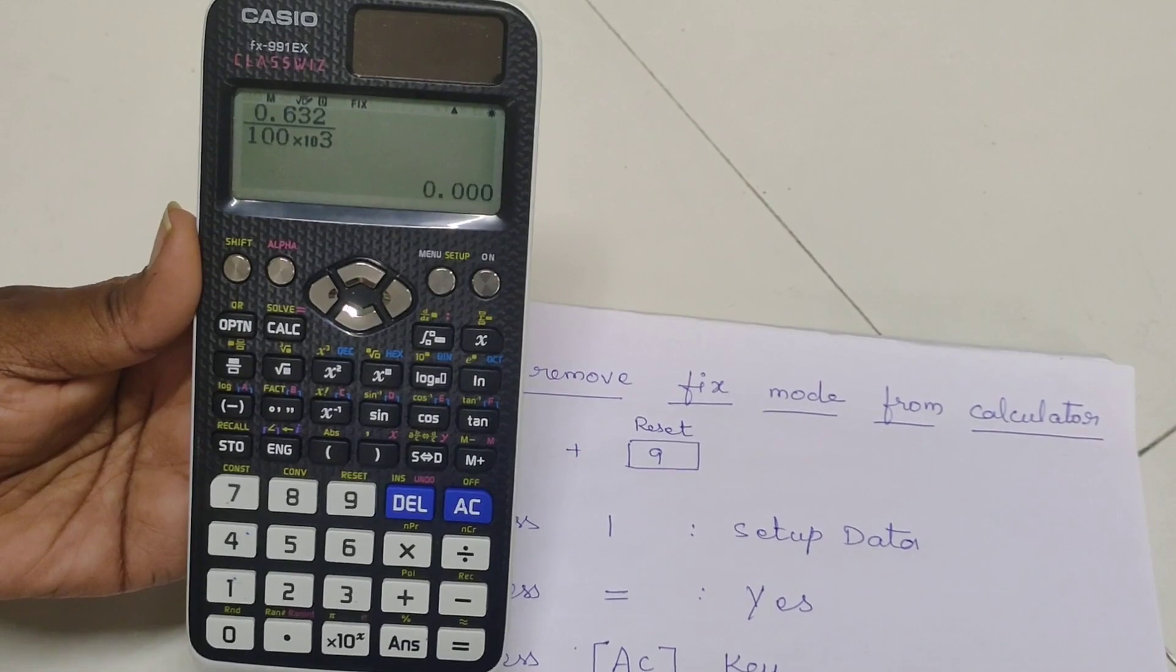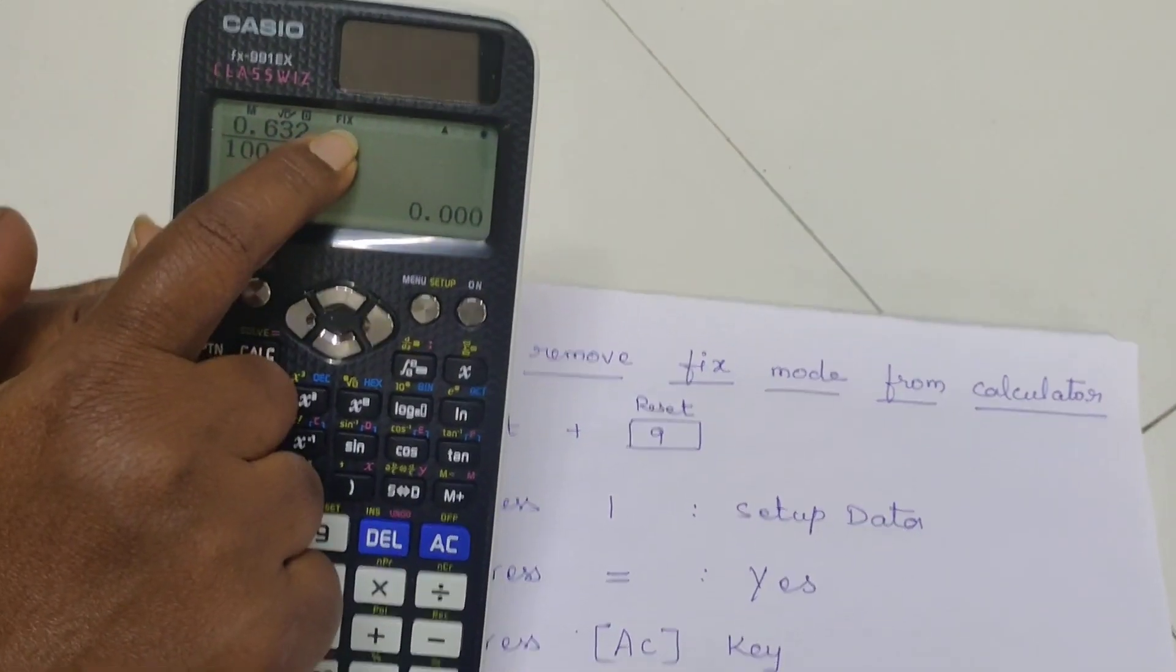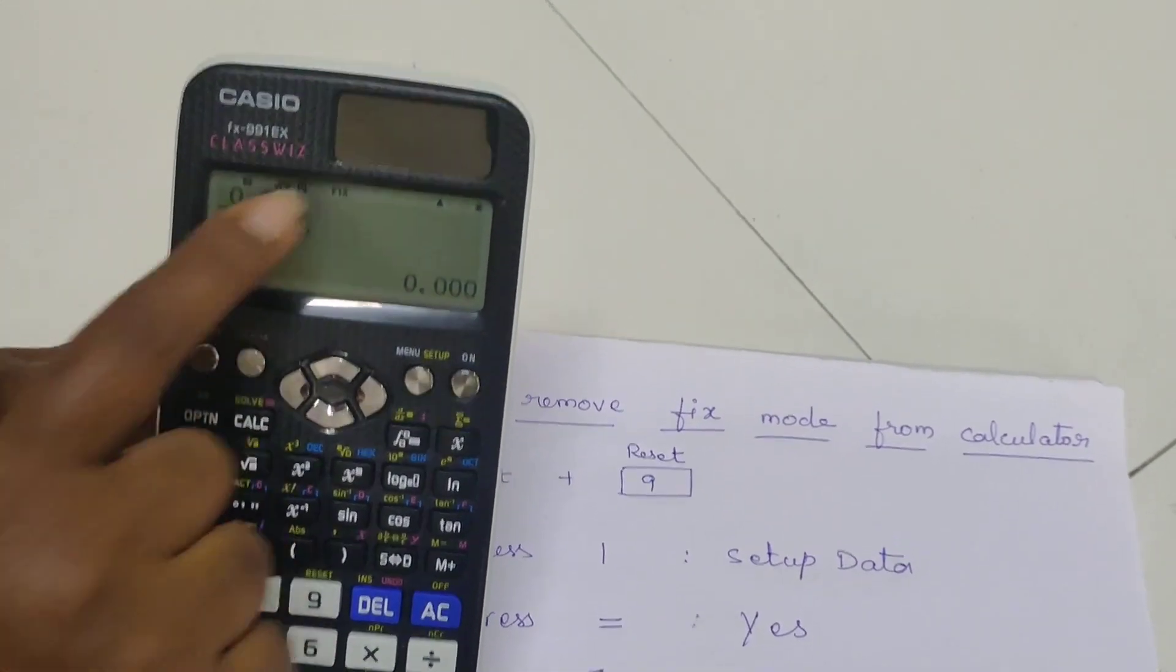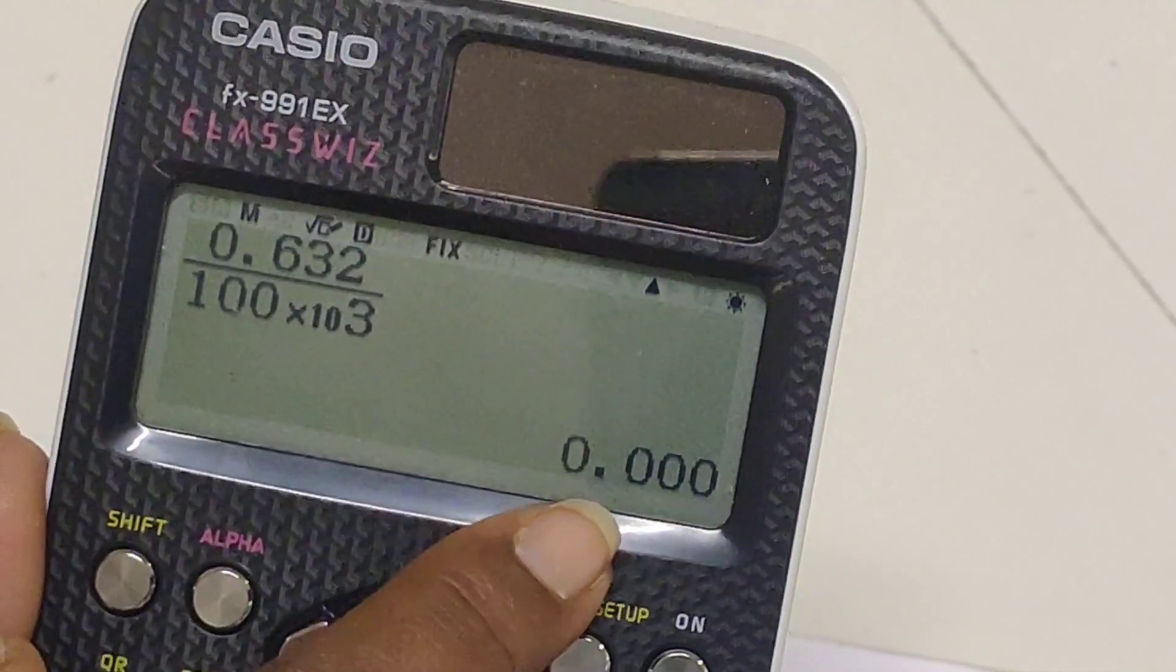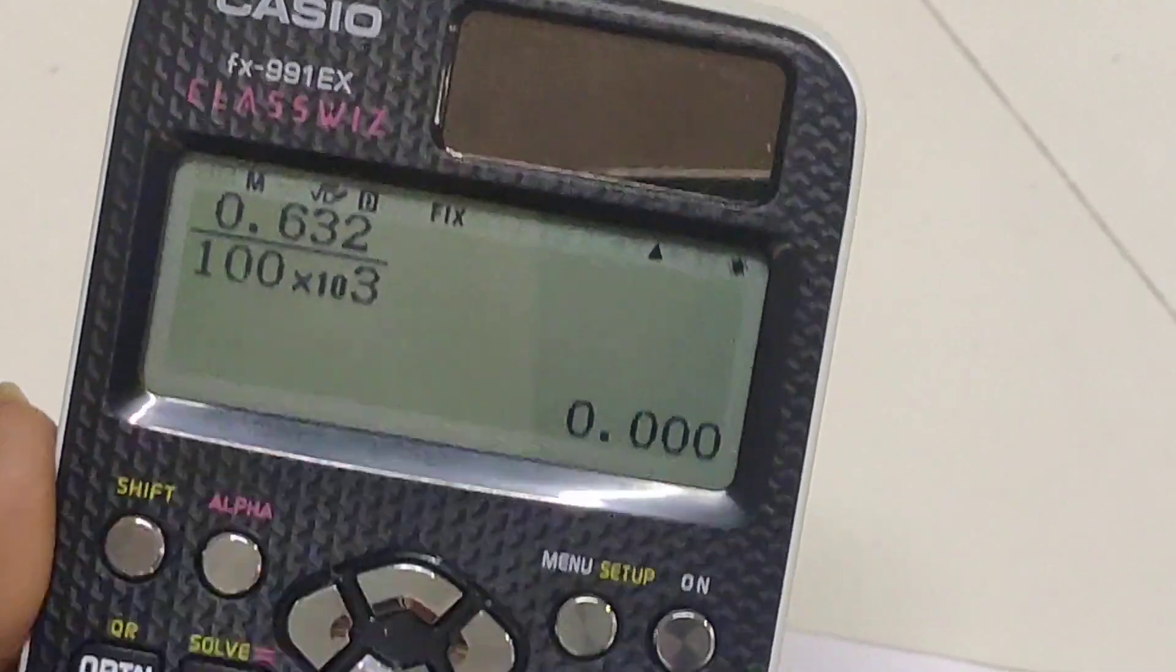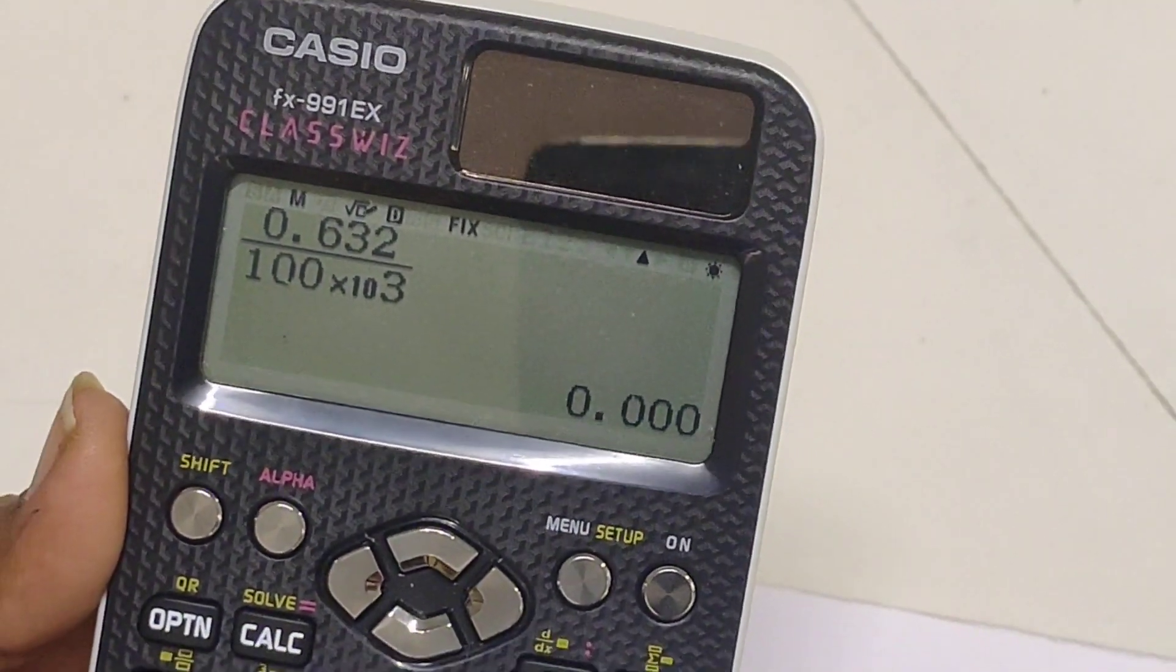Why it is showing because of the fixed mode. Now you see in the top center we can observe that f i x we fixed that means in the calculator we fixed only 3 decimals that is what the answer is showing 0.000.